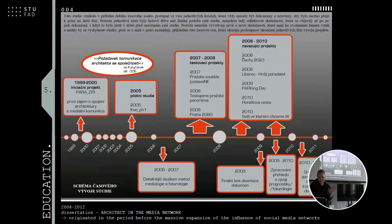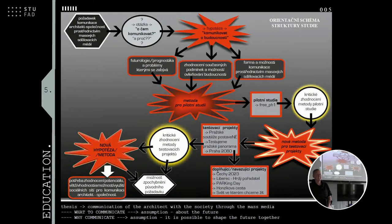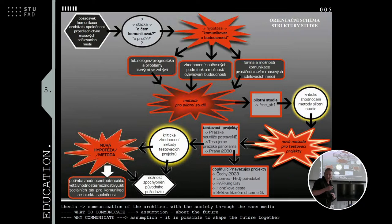My thesis argued: if the architect should communicate, what should it be about? For the past we have historians; for the present we have architecture critics; but architects design things for the future. So from my point of view, the only thing an architect should communicate about is the future. This then led me to ask what the practicing architect actually knows about the future — do they really concern themselves with it?